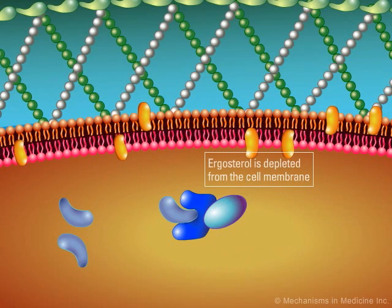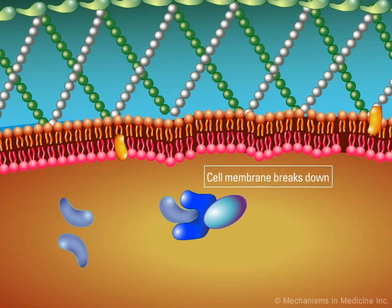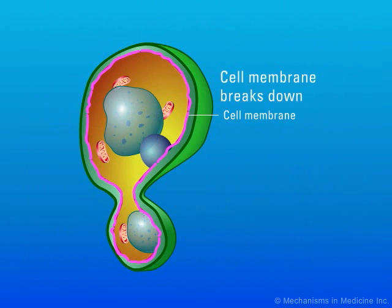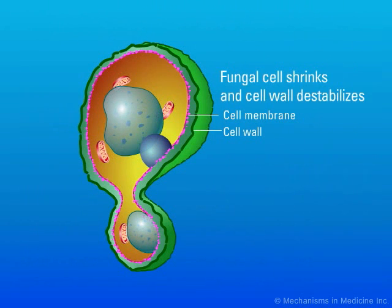The lack of ergosterol in the fungal cell membrane makes it very unstable. Eventually, the cell membrane begins to break down and the fungal organism dies.